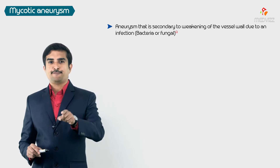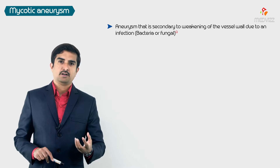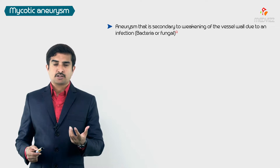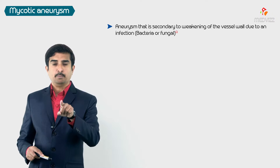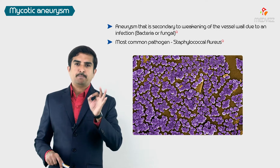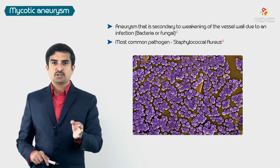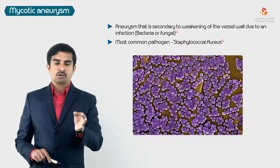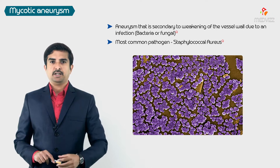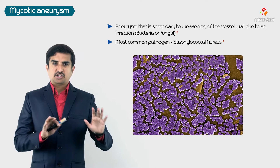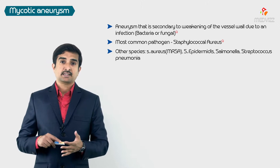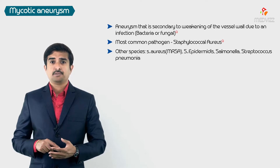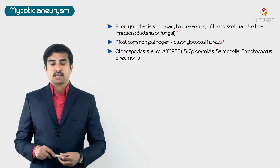An aneurysm secondary to weakening of the vessel wall due to an infection is called a mycotic aneurysm. The culprit organisms are most commonly bacteria; fungi also have a role but are not the most common pathogen. The most common pathogen in the development of mycotic aneurysms is Staphylococcus aureus — this is an important MCQ point. Other species include MRSA, Staph epidermidis, Salmonella, and Streptococcal pneumoniae.